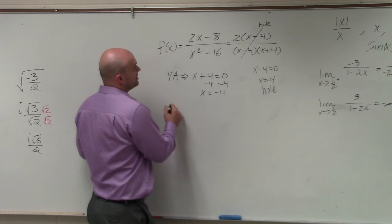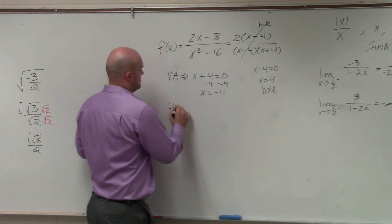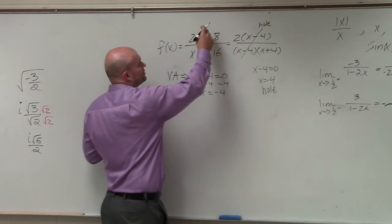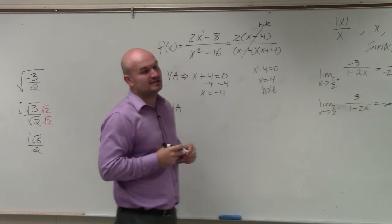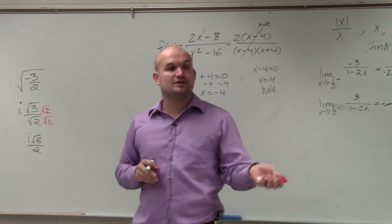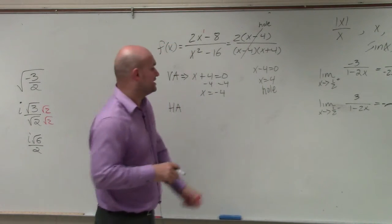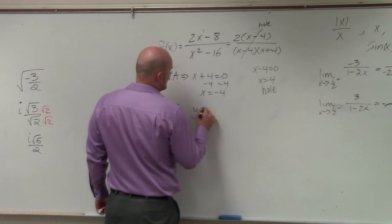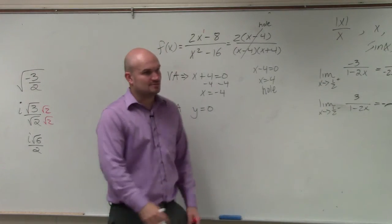To find the horizontal asymptote, we compare the degree in the numerator compared to the degree in the denominator. Remember, whenever the degree in the denominator is greater than the degree in the numerator, y equals zero is your horizontal asymptote. Done.